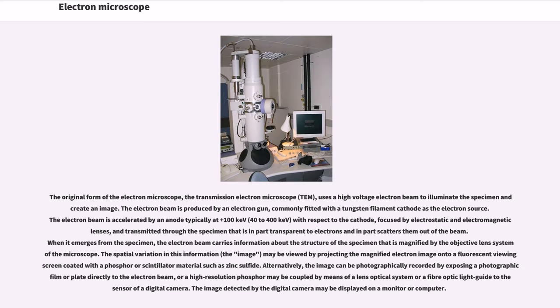The original form of the electron microscope, the transmission electron microscope TEM, uses a high-voltage electron beam to illuminate the specimen and create an image. The electron beam is produced by an electron gun, commonly fitted with a tungsten filament cathode as the electron source. The electron beam is accelerated by an anode typically at plus 100 kilo electron volts, 40 to 400 kilo electron volts,